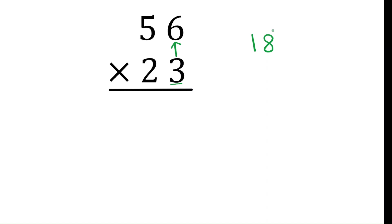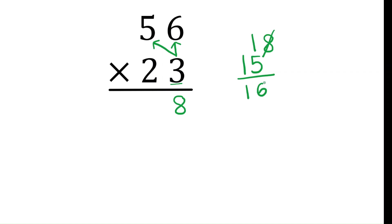Multiply 3 with the ones place of 56, that is 3 times 6 is 18. Write 8 in the answer and carry 1. Now multiply 3 with the tens place: 3 times 5 is 15, plus the carry of 1 is 16. Write 6 in the answer. There are no more digits to multiply, so write the carried 1 in the answer as well.